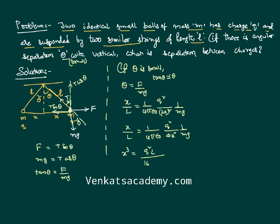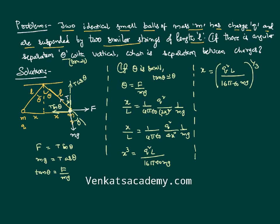Rearranging, we get x³ equals q² L divided by (16π epsilon₀ mg). Therefore x equals the cube root of [q² L / (16π epsilon₀ mg)]. This is how we calculate the value of x — the half-separation between the two charges.